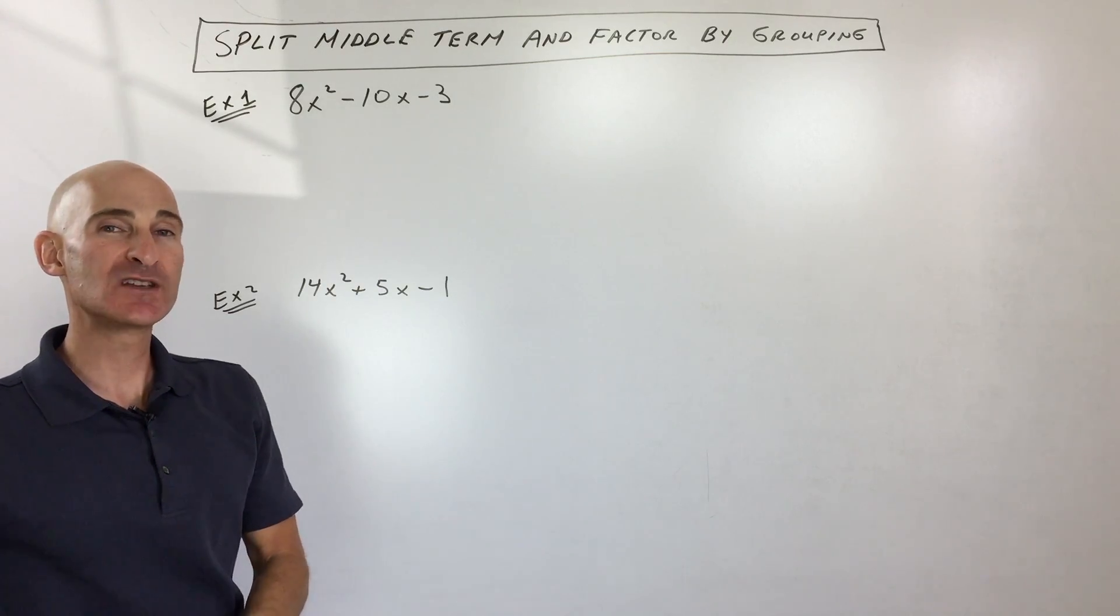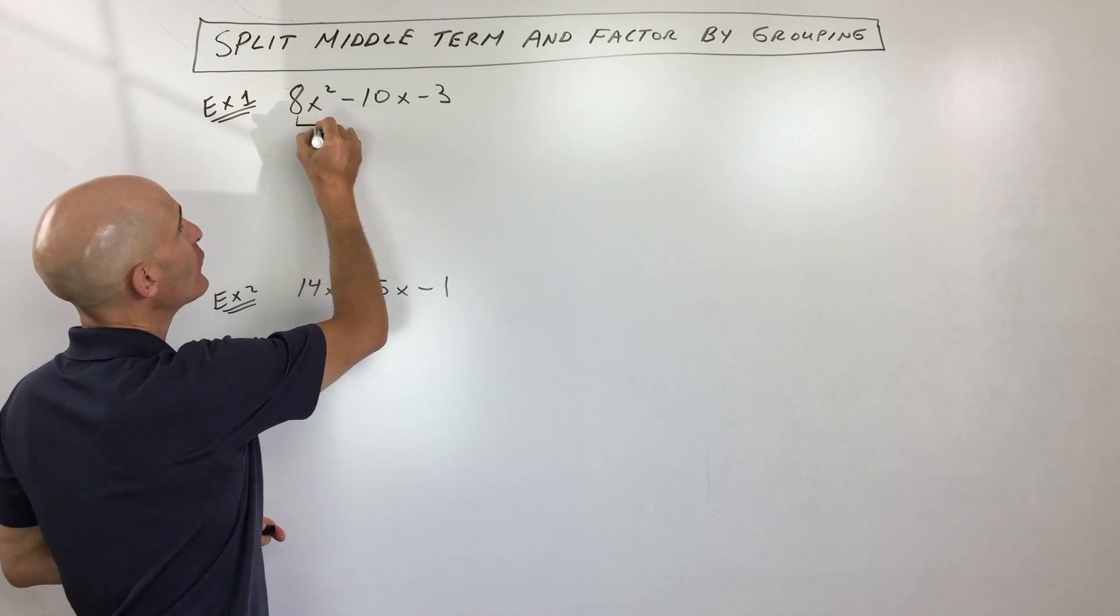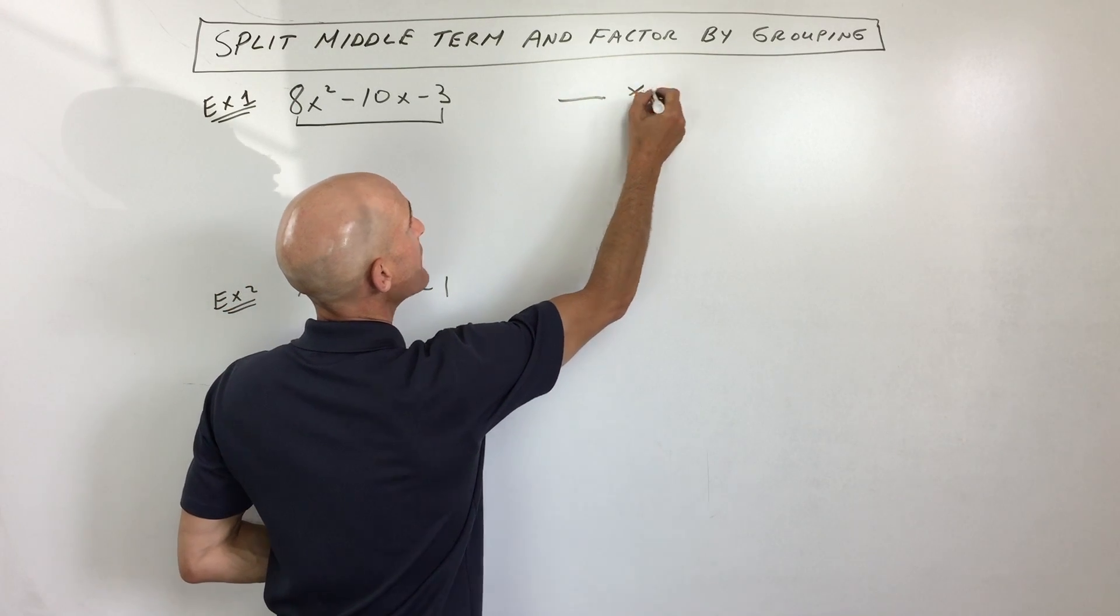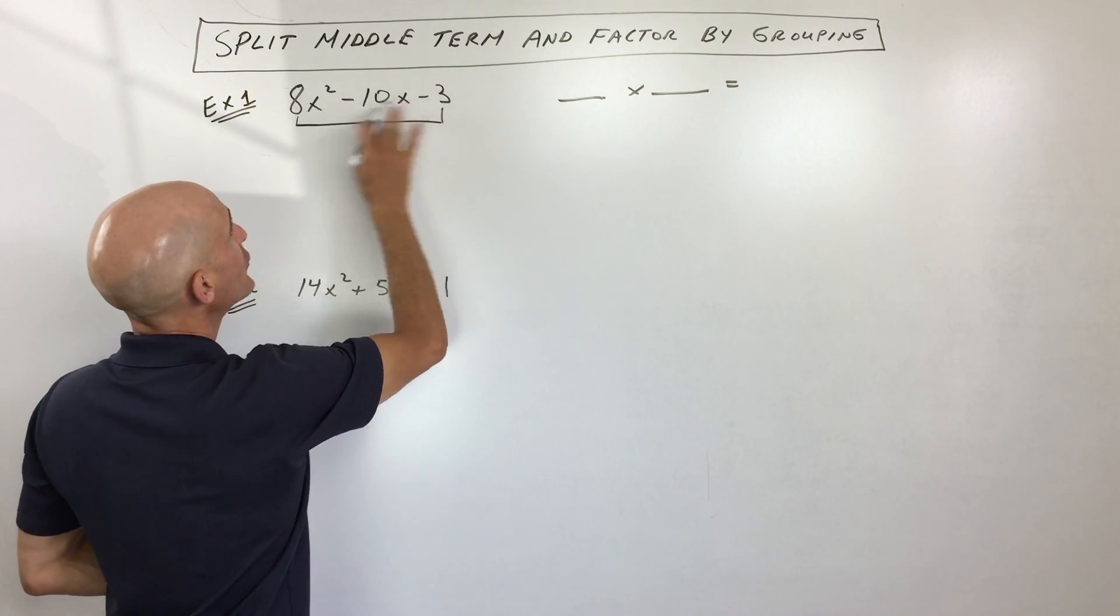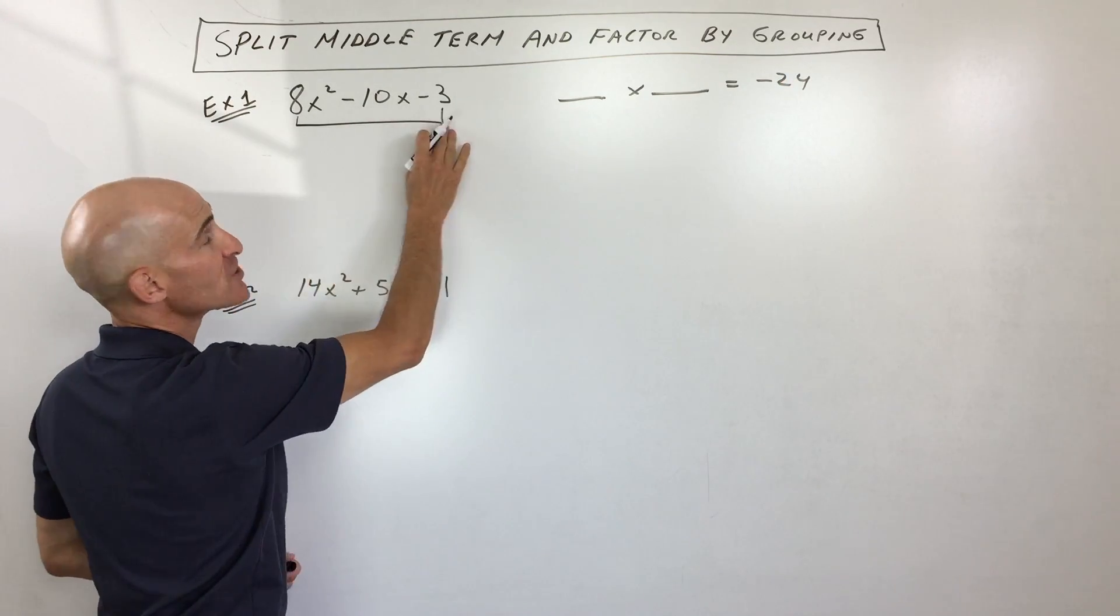These problems tend to be a little bit more difficult, and you can use this splitting the middle term technique. So what you do is you take the leading coefficient times the constant. So you ask yourself what two numbers multiply to negative 24. So that's the product of the leading coefficient and the constant.